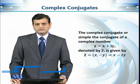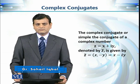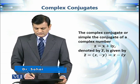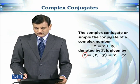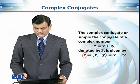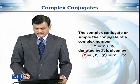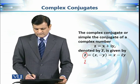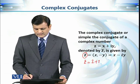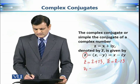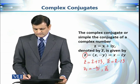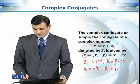Let us first define what the conjugate of a complex number is. Given a complex number z = x + iy, its conjugate, denoted by z̄, is equal to x − iy. Simply put, to calculate the conjugate we replace iota with minus iota. For example, if z = 2 + 3i, then z̄ = 2 − 3i. Similarly, if z1 = −4i, then z̄1 = 4i.